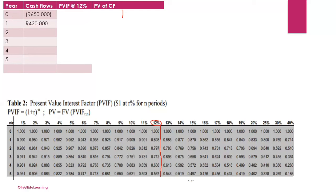For years one through five, take the cash flow amounts directly from the provided table and place them into your working table. To get the present value interest factors, look at the PVIF table: the rates are along the top row and the number of years (n) runs down the side. Locate the 12 percent column and read off the factor corresponding to each year.